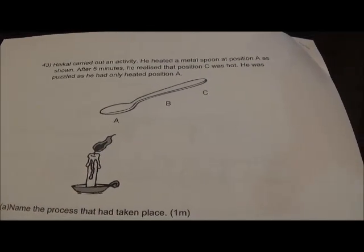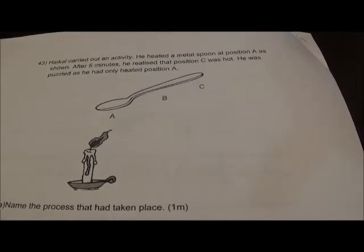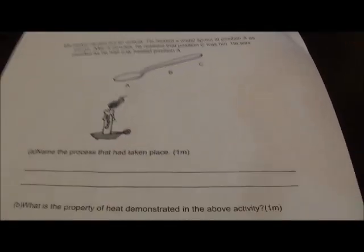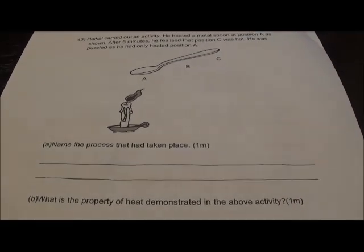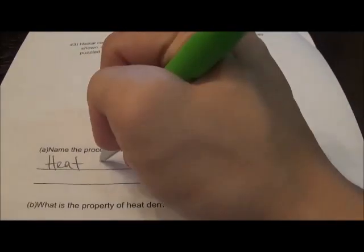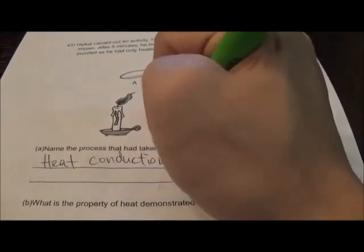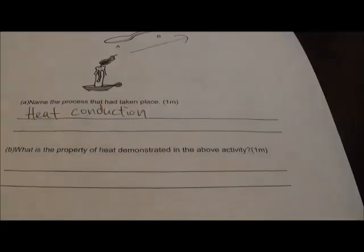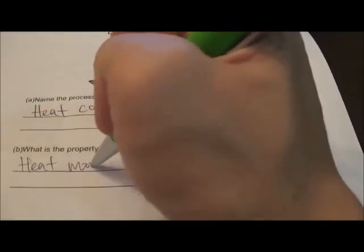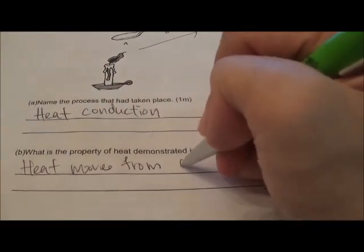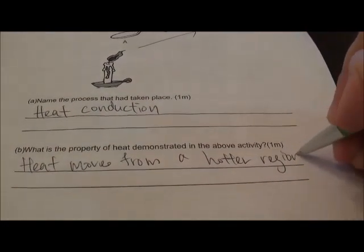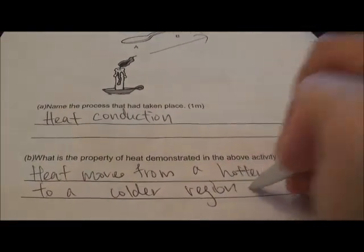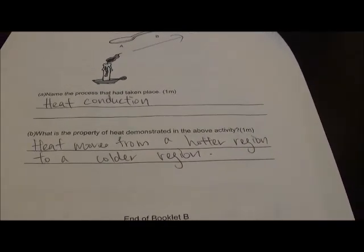Question 43: Heiko heated a metal spoon at position A and after 5 minutes, position C was hot too. The process is heat conduction — heat moves through the metal spoon. The property of heat: heat moves from a hotter region to a colder region.